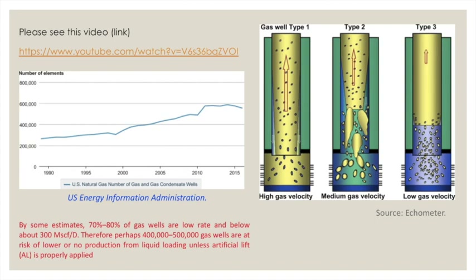There are a large number of gas wells that have been drilled. Over the period from 1990 to 2015 the number of gas wells has increased significantly. By some estimates, 70 to 80 percent of gas wells produce at low rates below 300,000 standard cubic feet per day. Therefore, perhaps 400,000 to 500,000 gas wells are at risk of low or no production from liquid loading unless artificial lift is properly applied.